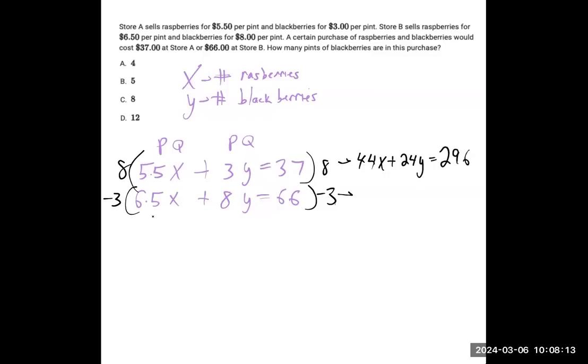For the next equation, negative 3 times 6.5 gives negative 19.5X. And negative 3 times 8 gives negative 24Y. That equals 66 times negative 3, which is negative 198.